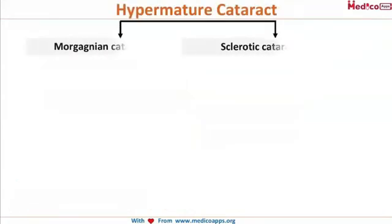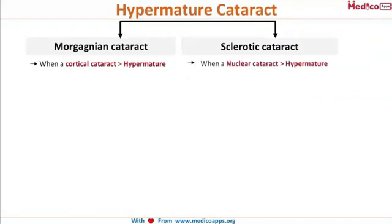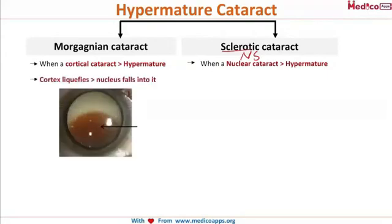Hypermature cataract is of two types: Morgagnian and sclerotic. Morgagnian cataract is when a cortical cataract becomes hypermature; when a nuclear cataract becomes hypermature, we call it sclerotic cataract, also famously known as nucleus sclerosis. In Morgagnian cataract, the cortex liquefies and the nucleus falls into it — the cortex shrinks and liquefies and the nucleus starts moving within it, causing phacodonesis.